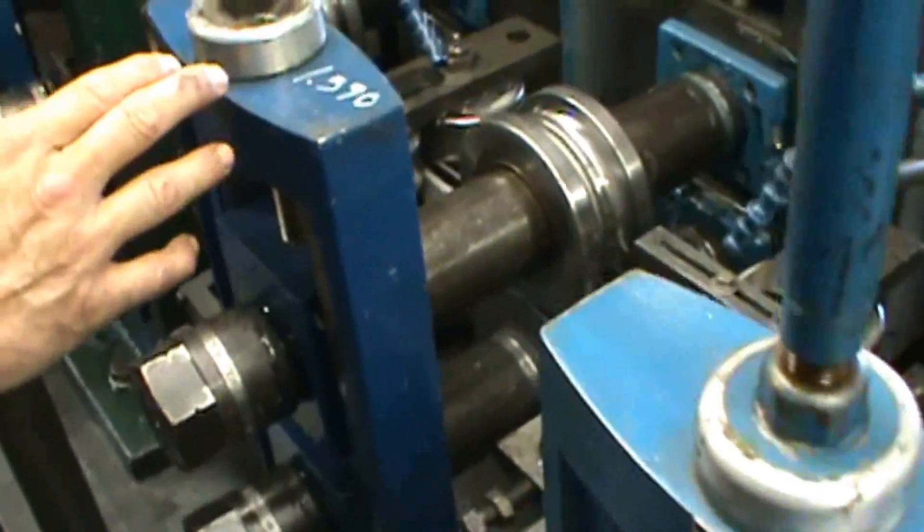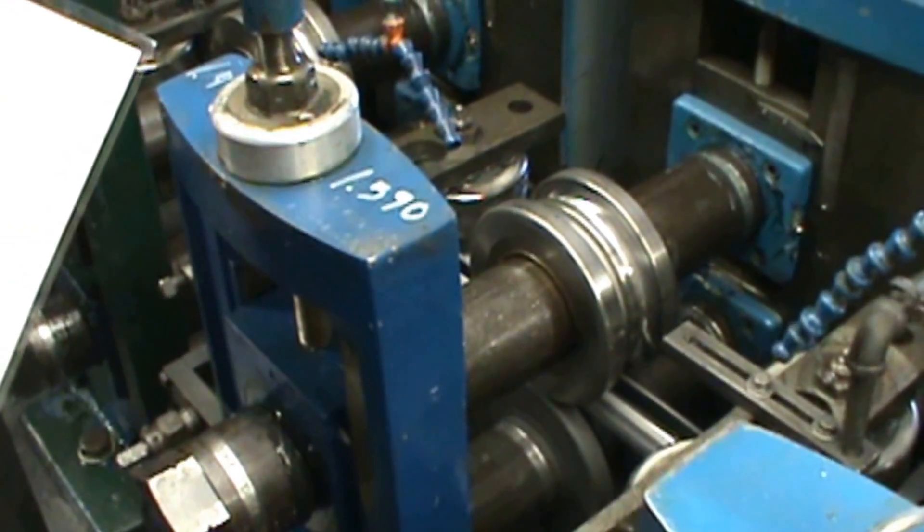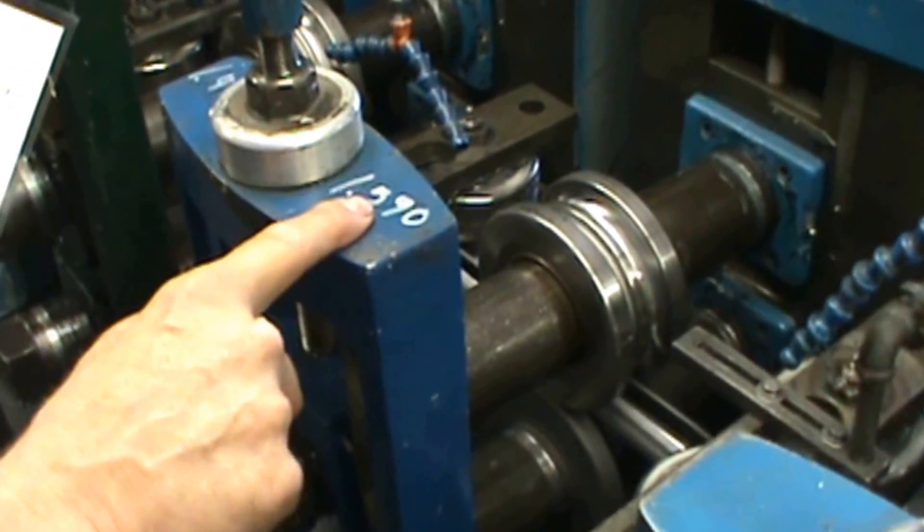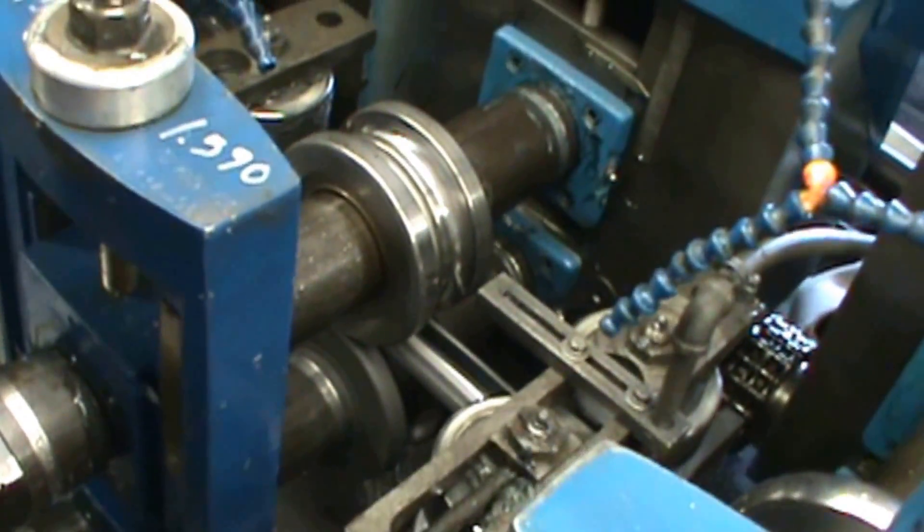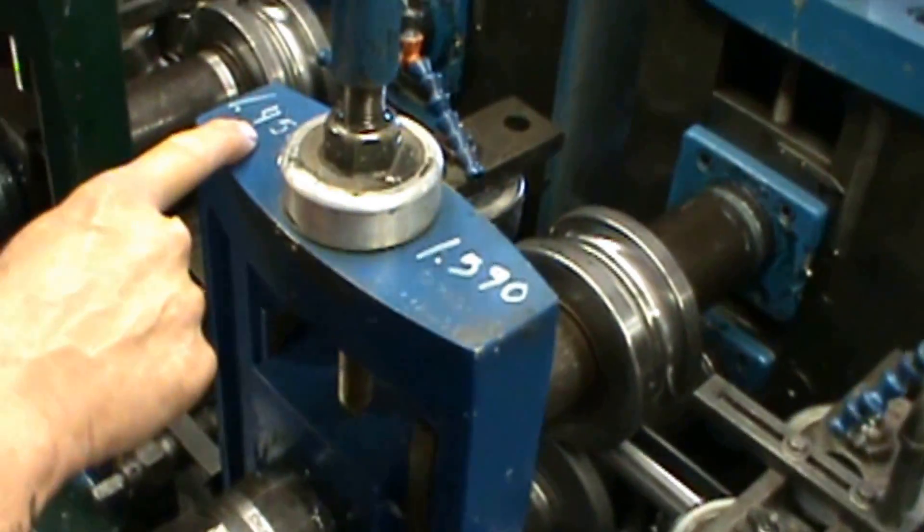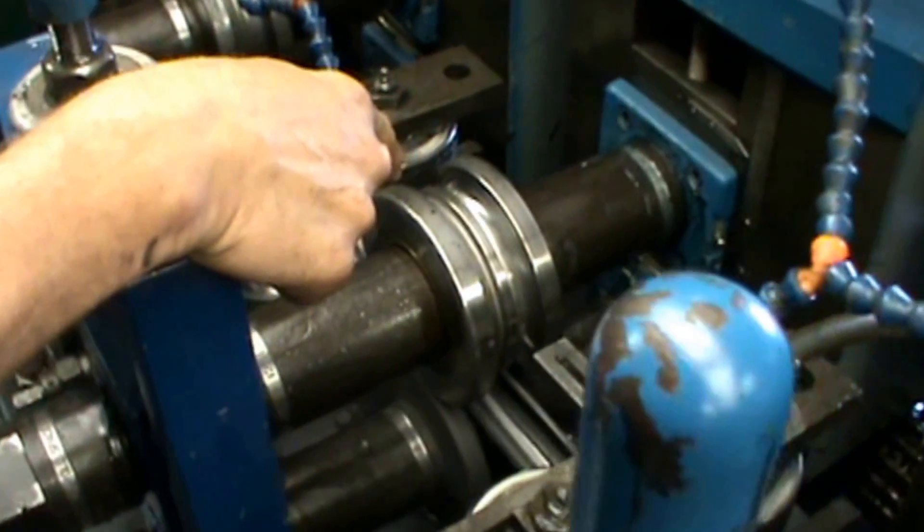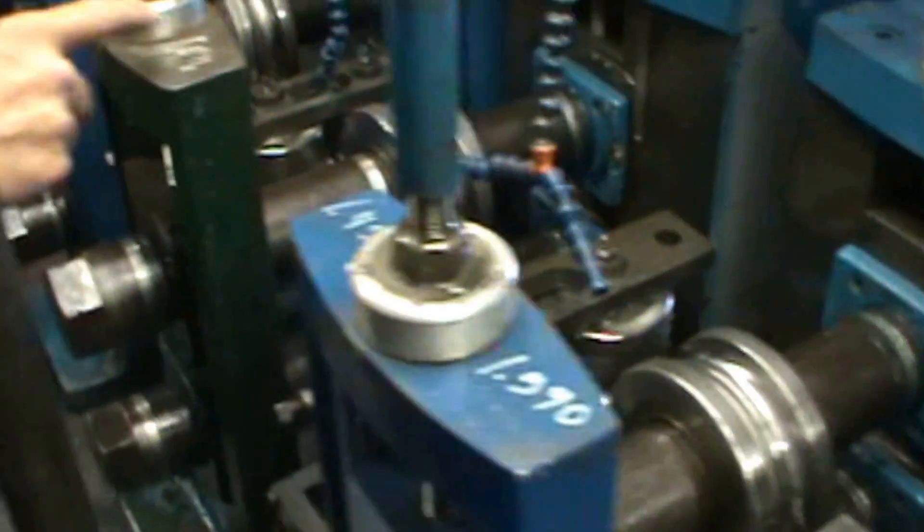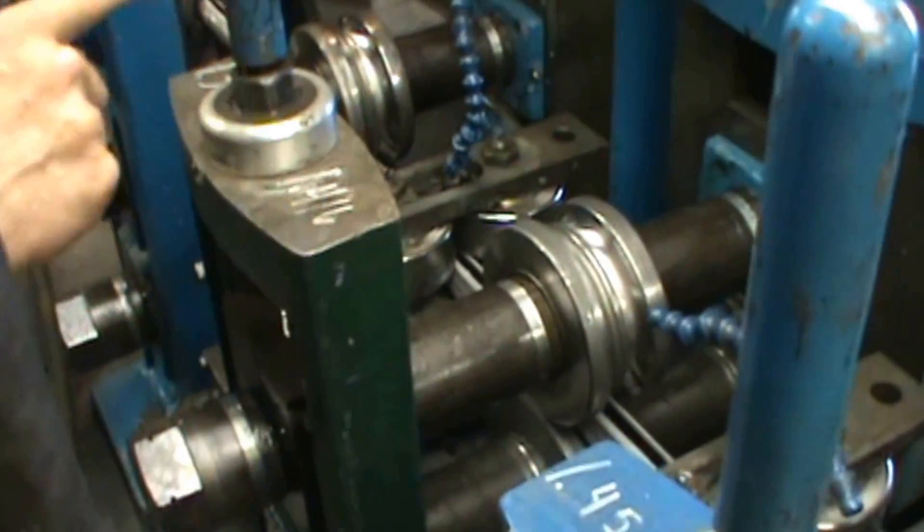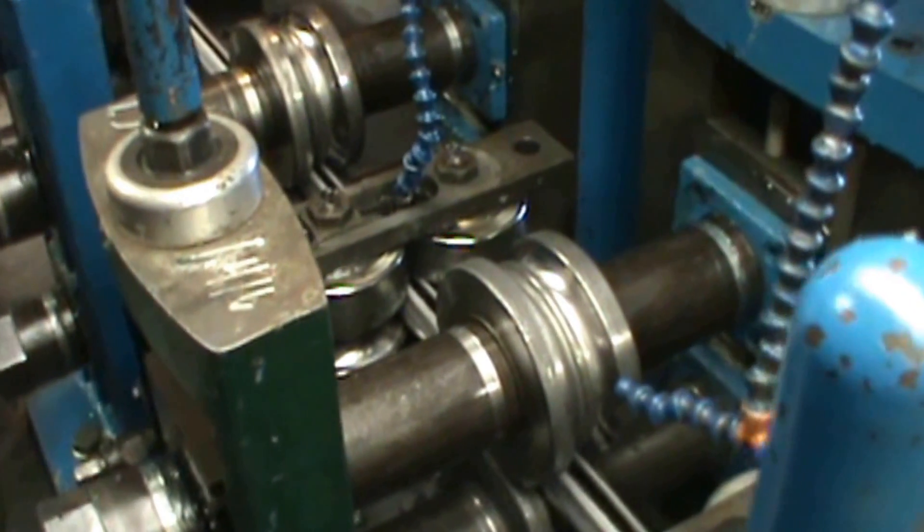And when we get here to the fin section, we simply write the figure from the setup chart on this side of the stand which will go for this side row. And then we have this dimension which will be for the fin section, and so forth and so on all the way through.